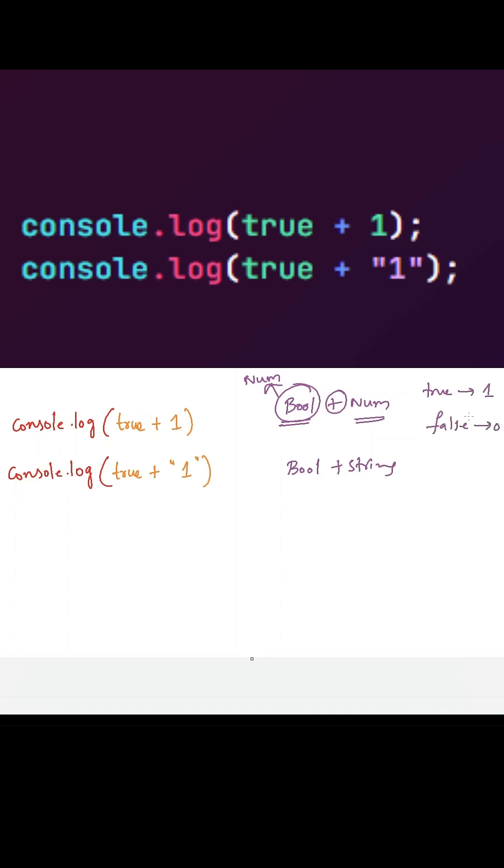into zero. Now whenever we use addition operator between a boolean value and a string, JavaScript will convert this boolean value into a string. So false will be converted into string 'false' and true will be converted into string 'true'. This way it will use the toString method and perform type coercion and convert this particular value into